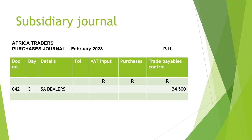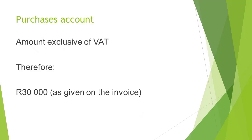In the details column, we will write the name of the supplier. For our transaction, that will be SA Dealers. In the Trade Payables Control Account column, we will write the amount of R34,500. In the Purchases Account, we will record the amount exclusive of VAT. On our invoice, that amount is indicated as R30,000.